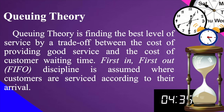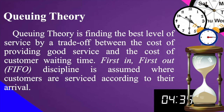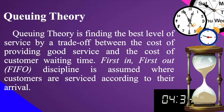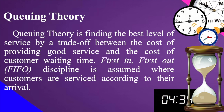Queuing theory is about finding the best level of service through a trade-off between the cost of providing good service and the cost of customer waiting time. Time is money, so as long as we are trapped in a waiting line, there is a cost — money is being lost. First In, First Out (FIFO) discipline is assumed when customers are serviced according to their order of arrival.